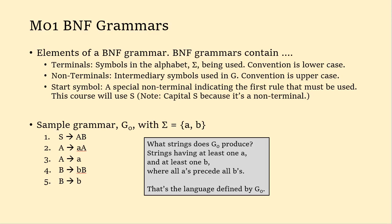Here's a sample grammar, G sub zero, our zeroth grammar. The alphabet is small — A and B — and there are five rules. We start with the start symbol; you have to have a rule for the start symbol. The start symbol can be replaced by capital AB — that's the only replacement we can do.